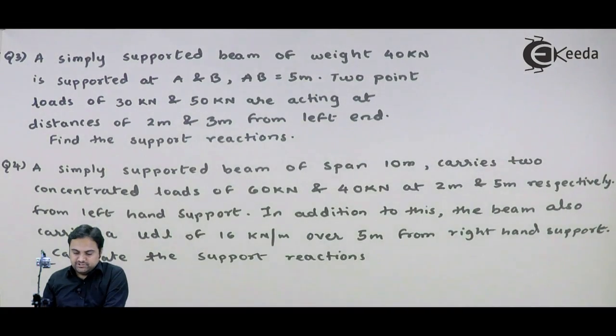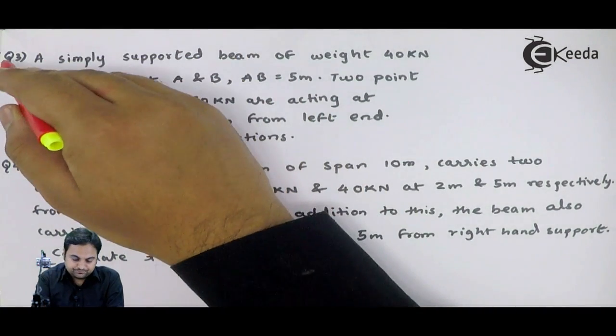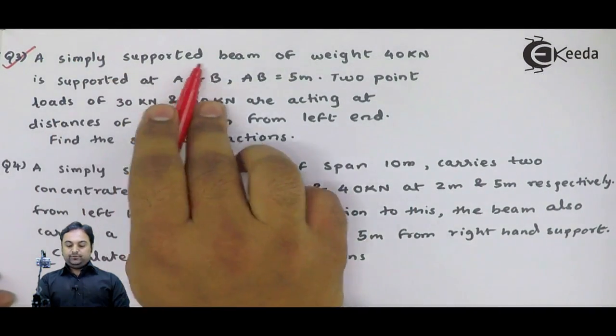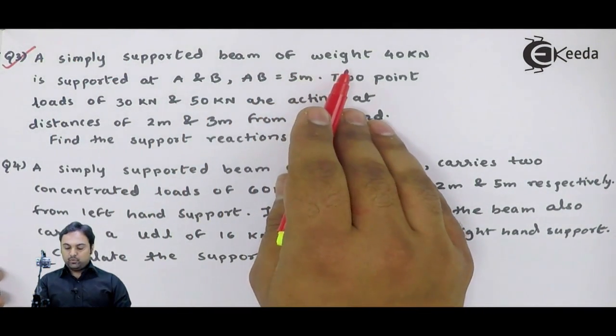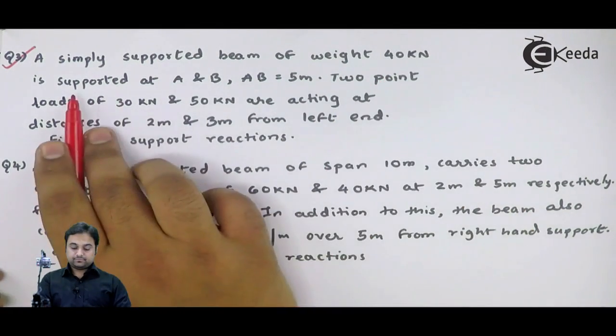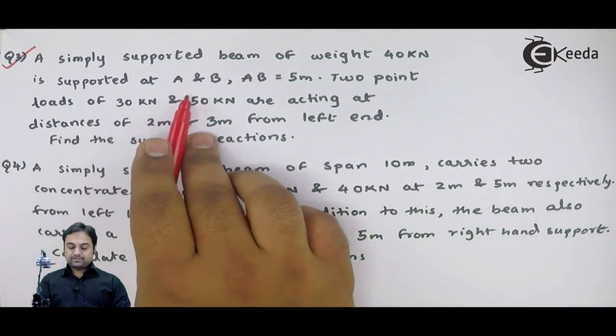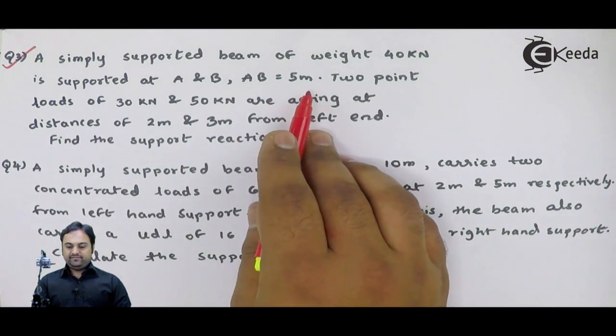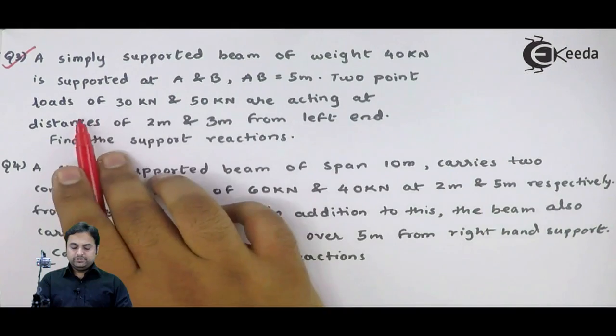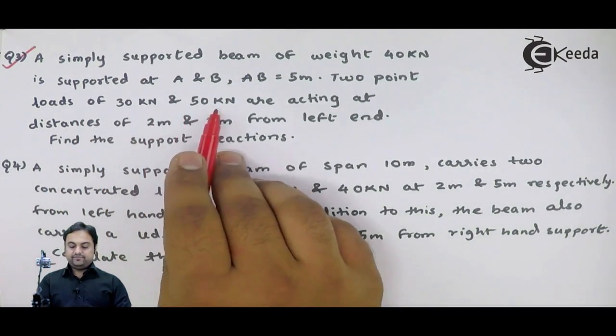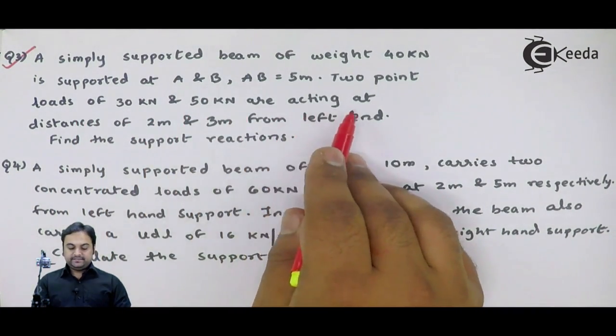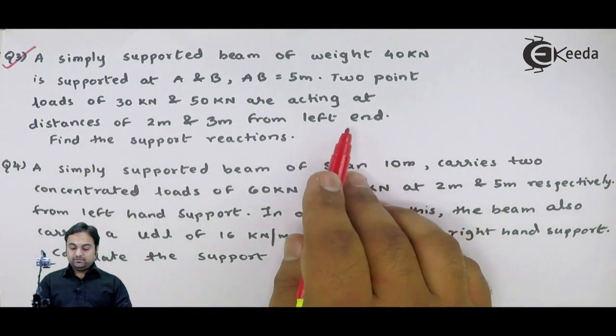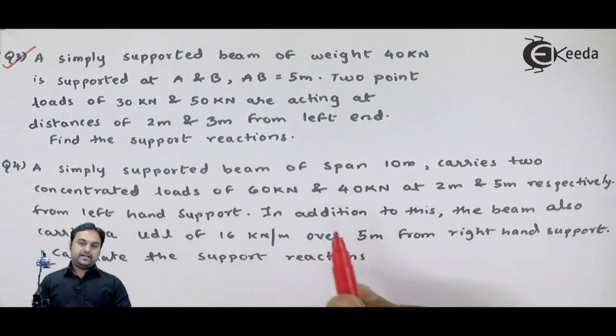Let us solve the next question, question number 3. I am marking this question. A simply supported beam of weight 40 kN is supported at A and B, where AB equals 5 meters. Two point loads of 30 kN and 50 kN are acting at distances of 2 meters and 3 meters from left end. Find the support reactions.